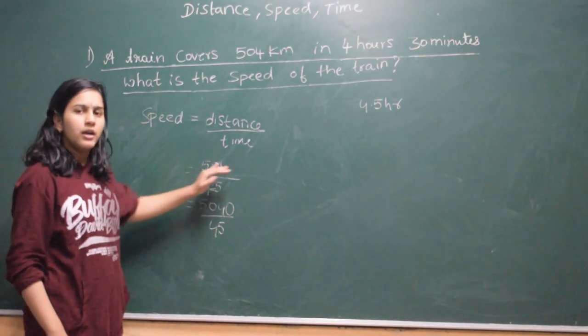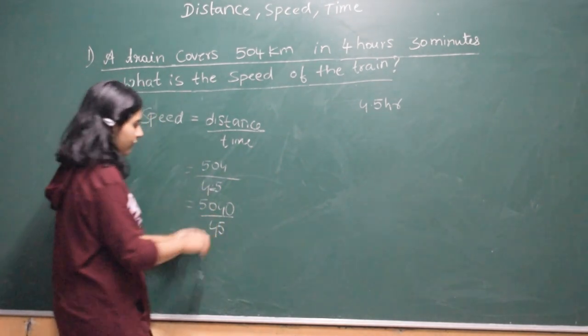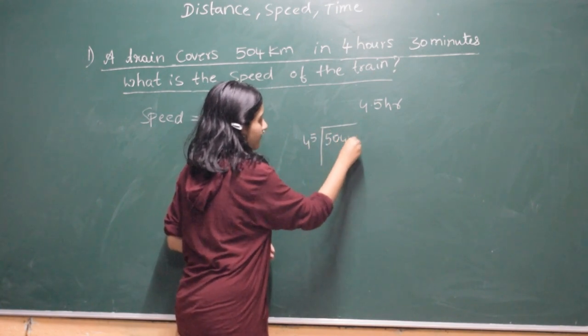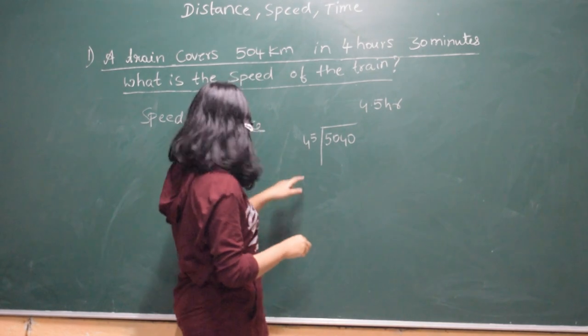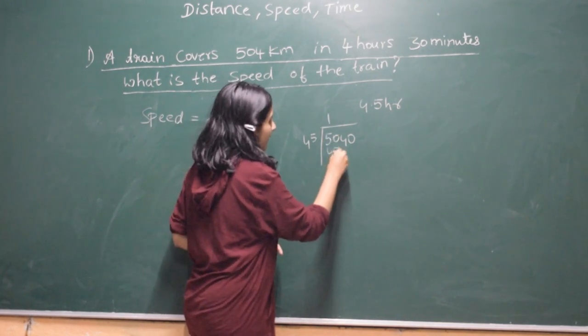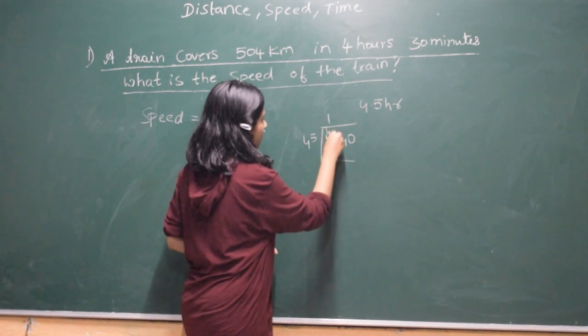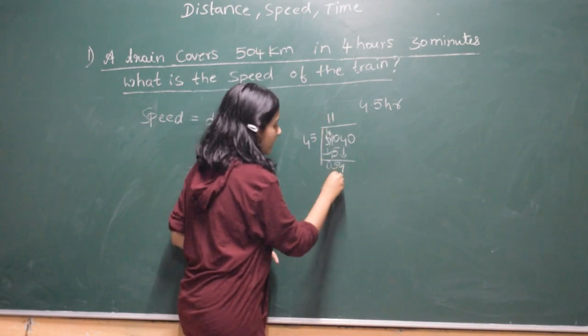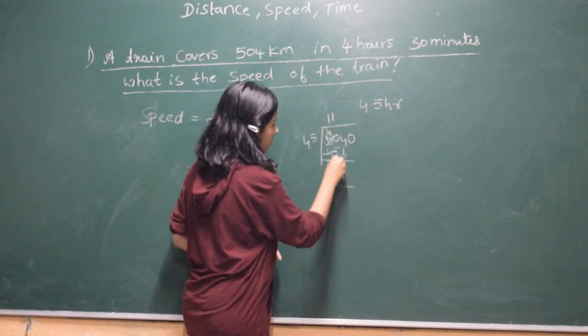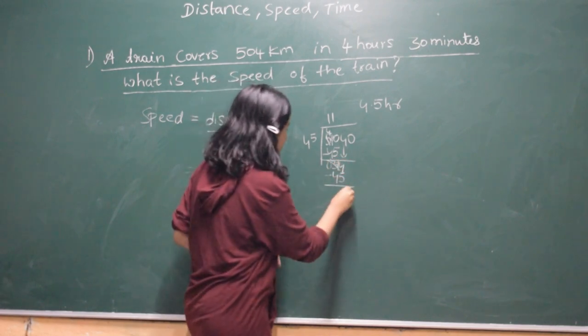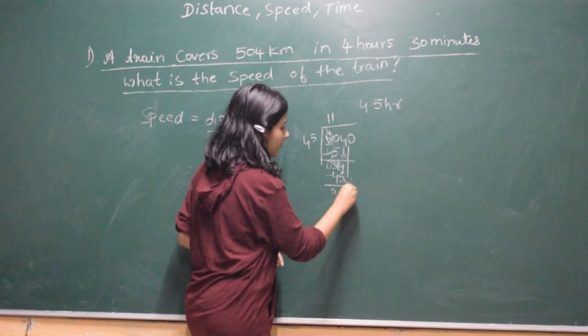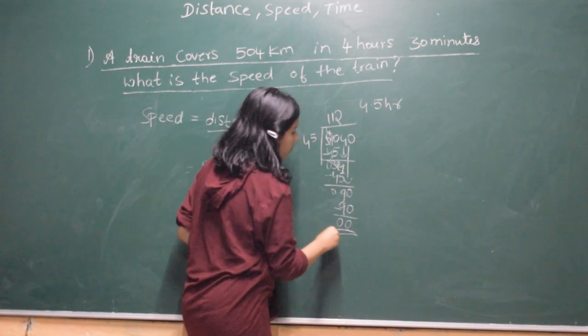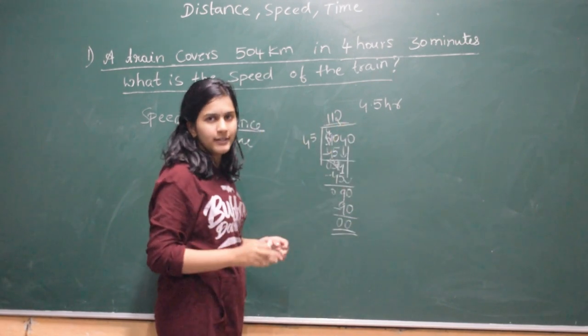We are adding 1 zero to the numerator. So now if you divide 45 by 5040, 45 ones are 45. We will get here 9. If you take this 0 down, we will get 90. 45 twos are 90. So the answer is 112 kilometer per hour.